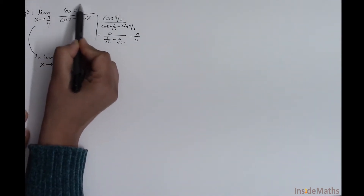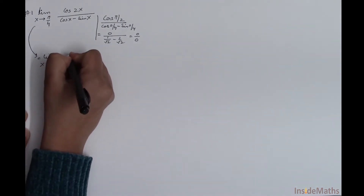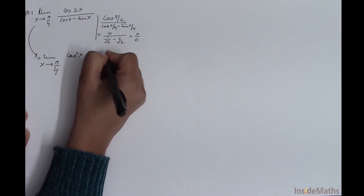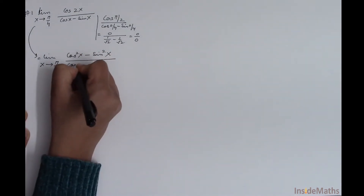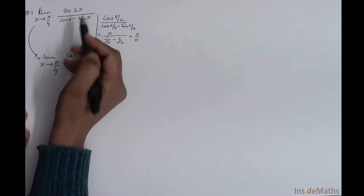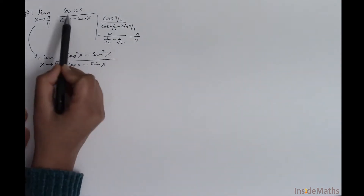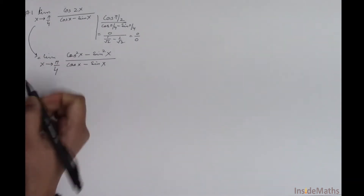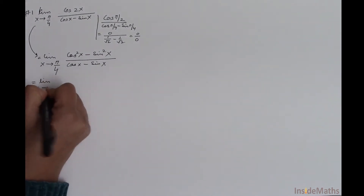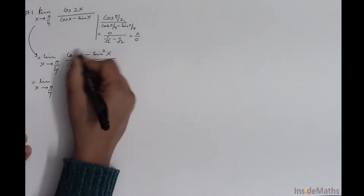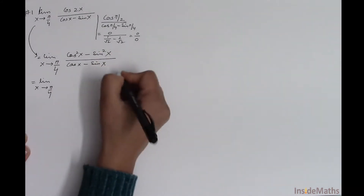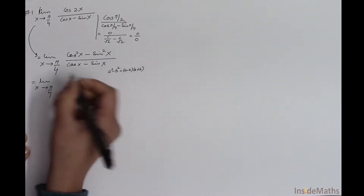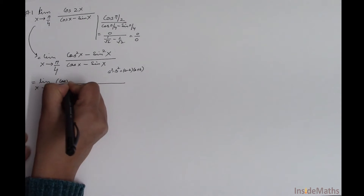I'll use the formula for cos(2x), which gives cos²x minus sin²x, divided by (cos x minus sin x). This is the trigonometric result: cos(2x) = cos²x minus sin²x. Now I'll simplify using the identity a² - b² = (a - b)(a + b), so the numerator becomes (cos x - sin x)(cos x + sin x).